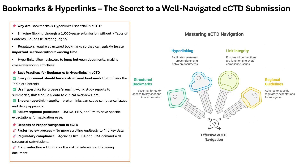Now let's talk about something small but super powerful: bookmarks and hyperlinks. Imagine a regulator reviewing your submission — they need to find a clinical study in module 5. Would they rather search thousands of pages manually or click a single link to go straight to the right document? That's why regulators like FDA and EMA insist on structured bookmarks and hyperlinks. Bookmarks create an easy-to-follow table of contents, while hyperlinks instantly connect related documents. Broken links or missing bookmarks can slow down approvals or even lead to rejection.